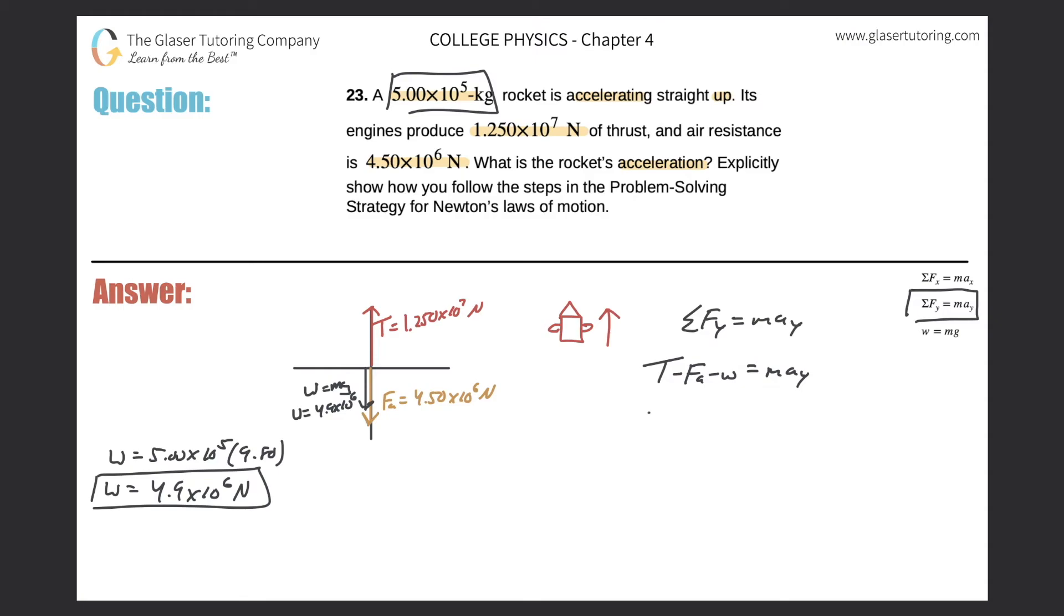T will represent thrust in this problem, so 1.250 times 10 to the 7 minus 4.50 times 10 to the 6 minus 4.9 times 10 to the 6 equals 5.00 times 10 to the 5 times a sub y. We got one equation with one unknown, let's solve it.